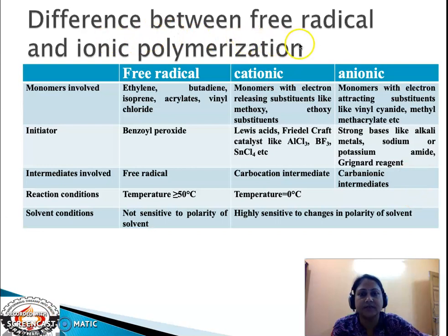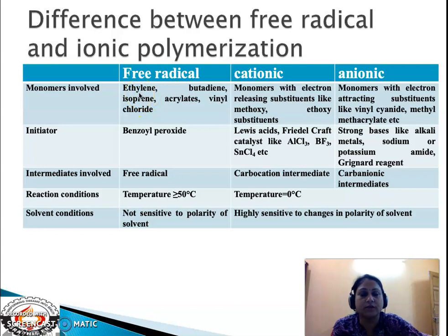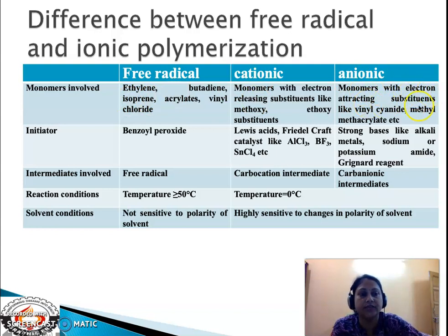Now let us see the differences between free radical and ionic polymerization — the ionic being cationic and anionic. Under free radical polymerization, monomers involved include those with double bonds: ethylene, butadiene, isoprene, acrylates, and vinyl chloride. Under cationic polymerization, monomers must have, besides a double bond, electron-releasing substituents like the ethoxy group. Under anionic polymerization, monomers must have a double bond along with electron-attracting substituents like vinyl cyanide and methyl methacrylate.